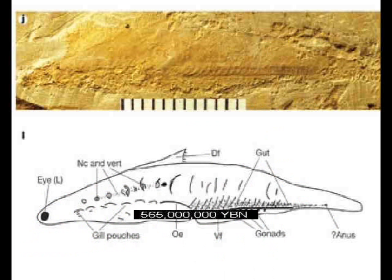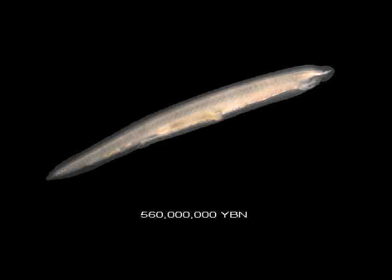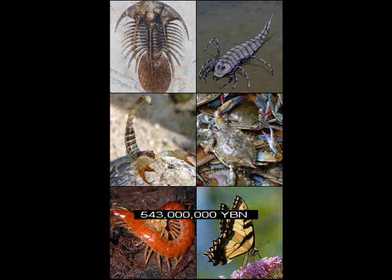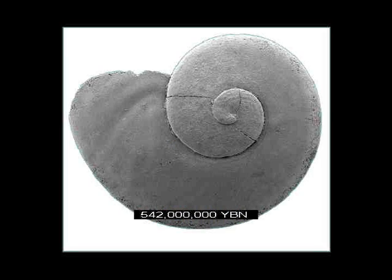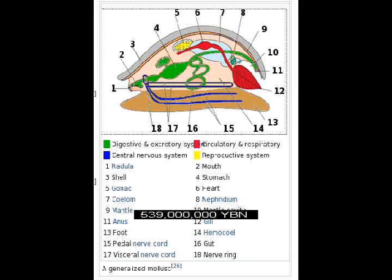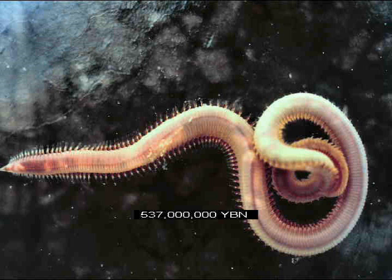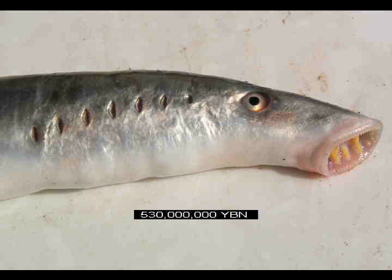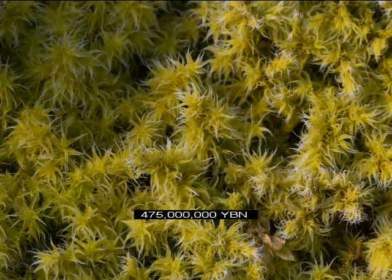Chordates: ancestor of all tunicates, fish, amphibians, reptiles, mammals, and birds. Tunicates. First fish. Arthropods: insects, crustaceans. First shell or skeleton. Mollusks. Heart. Segmentation. Vertebrates: ancestor of most fish and all amphibians, reptiles, mammals, and birds.